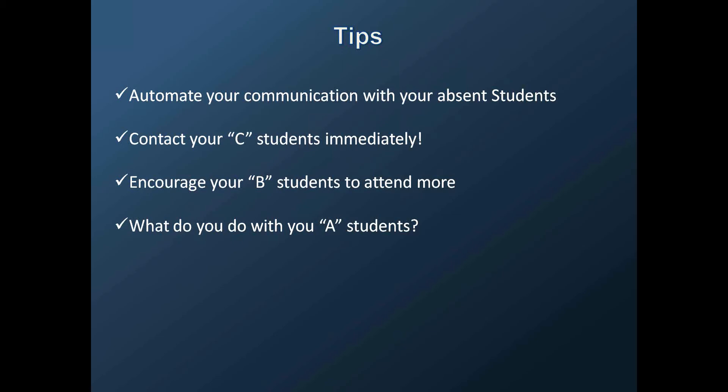The tips here: automate your communication with your absent students — set up automated emails. This doesn't mean you shouldn't be making phone calls; you need to be making phone calls as well. But the idea is you can set PerfectMind to automatically contact these students. Contact your C students immediately. We're going to show you today exactly how you locate your C students and exactly what to do from there. Encourage your B students to attend more, and reward your A students on the mat.